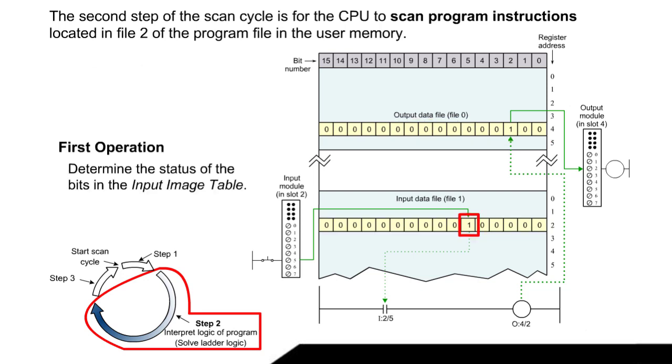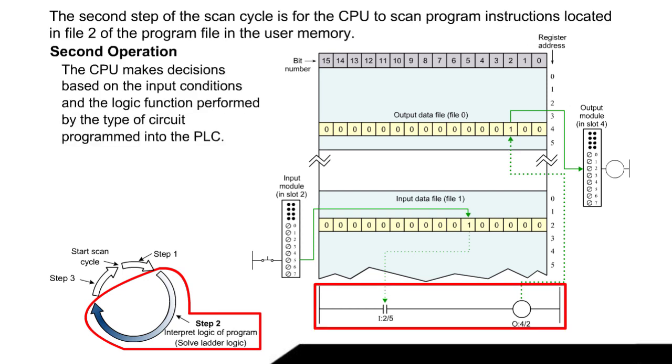The first operation: Determine the status of the bits in the input image table. The second operation: The CPU makes decisions based on the input conditions and the logic function performed by the type of circuit programmed into the PLC.